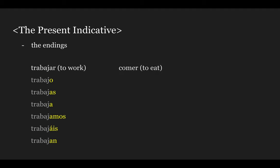Next is the verb comer, which means 'to eat.' You will have: como, comes, come, comemos, coméis, comen. So you get the -o, -es, -e, -emos, -éis, -en endings for this verb.